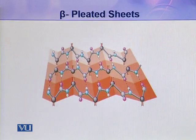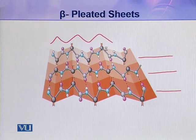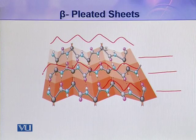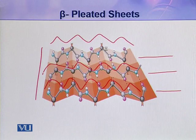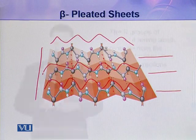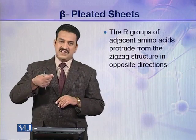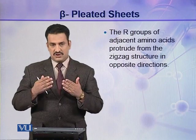Here you can see three polypeptide chains — 1, 2, and 3 — arranged in a zigzag manner. When these three zigzag chains arrange side by side, they make a sheet, and in this sheet you can see the pleats. This is called a beta pleated sheet. In this sheet, the R groups of adjacent amino acids protrude out from the zigzag structure in opposite directions.